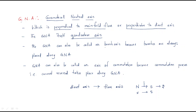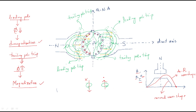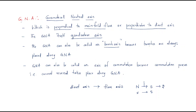The GNA can also be called the brush axis. We have two brushes — brush one and brush two. Brushes are a very important part of DC machines, used to collect current from the DC generator or supply current to the DC motor. Brushes are always placed along the GNA, so GNA is also called the brush axis.